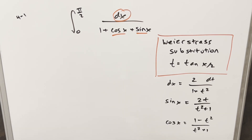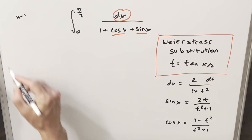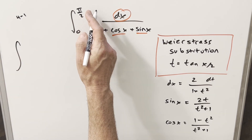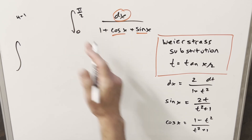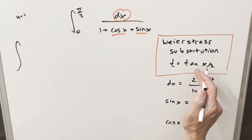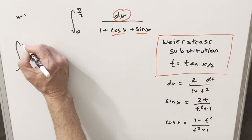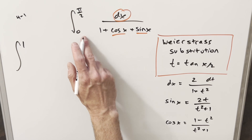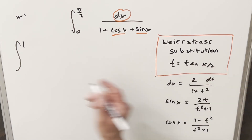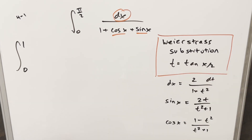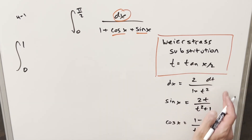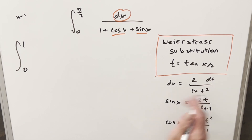Now we have everything on the right to make the substitution. Starting with the bounds: plugging in pi/2, we get tan(pi/4) which is one. Plugging in zero, tan(0) is zero. So our bounds go from zero to one. Our dx value provides the numerator.